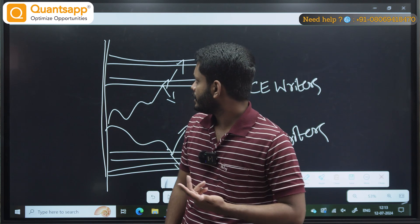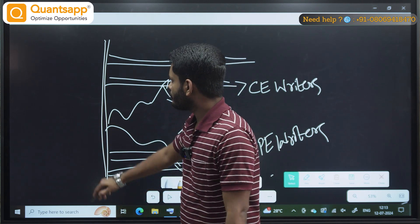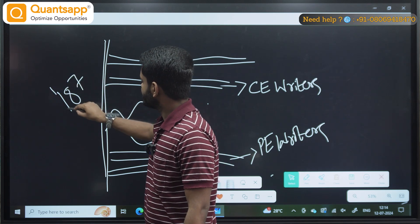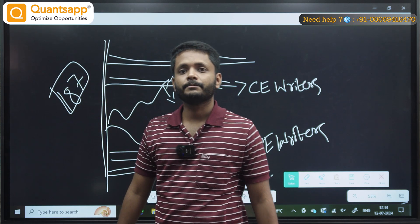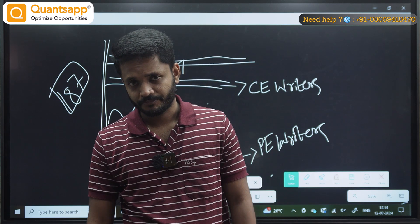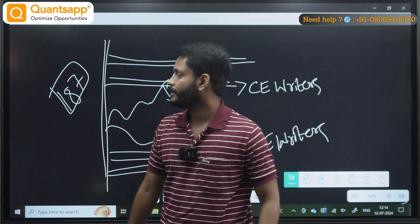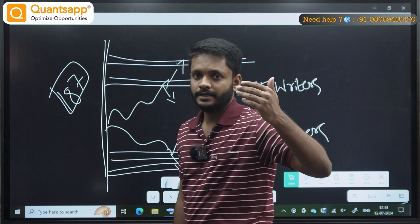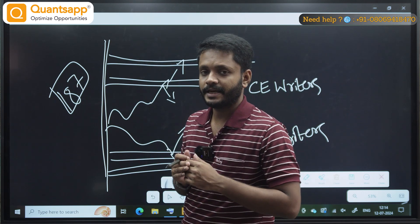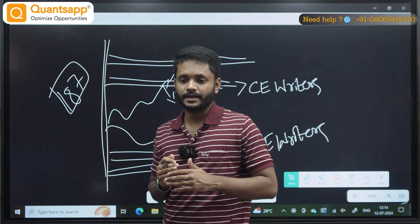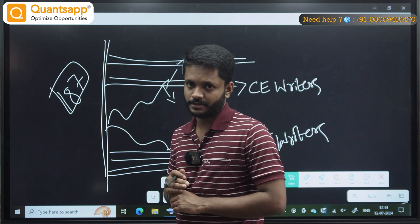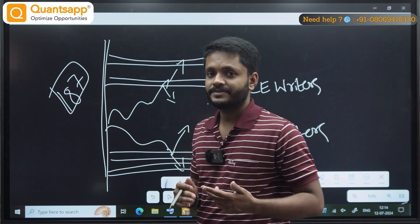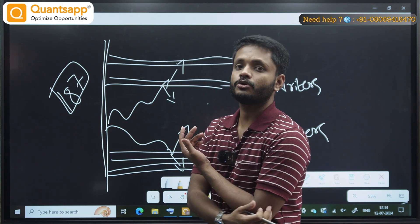Now, my question to you is: there are almost 187 F&O scripts. How many call writer traps? How many put writer traps do you know? There is a problem — 187 scripts, manually checking each option chain is not possible.